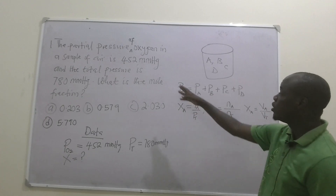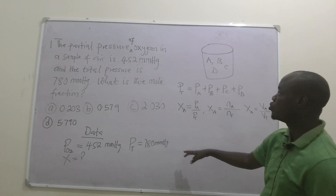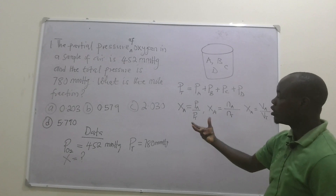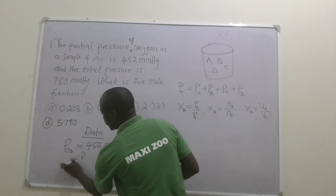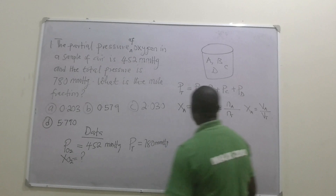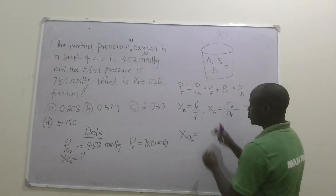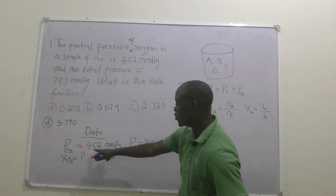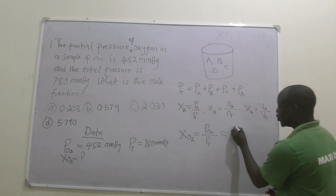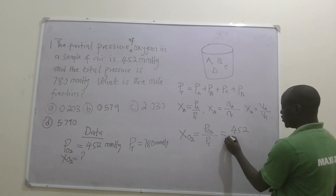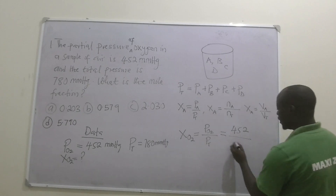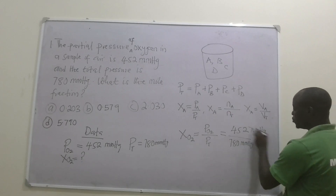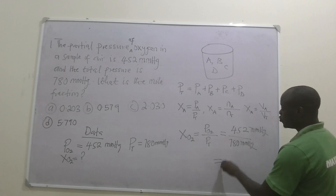Now looking at the question, what we want to calculate is the mole fraction of oxygen. We are given the partial pressure of oxygen and the total pressure. So the mole fraction of oxygen equals the partial pressure of oxygen, which is 452 mmHg, divided by the total pressure, which is 780 mmHg. The units cancel, and dividing gives us 0.579.